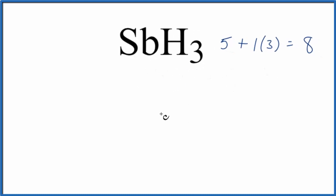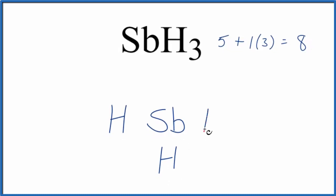Hydrogens always go on the outside of our Lewis structure, so we'll put this antimony in the middle, and then let's put our hydrogens around the outside. We have eight total valence electrons, so we'll put two between atoms to form the chemical bonds. That'll use up six of our valence electrons.